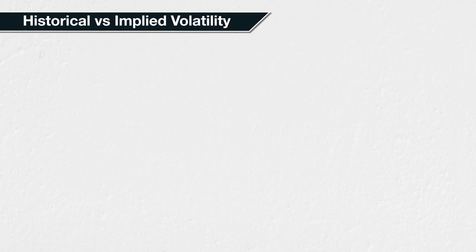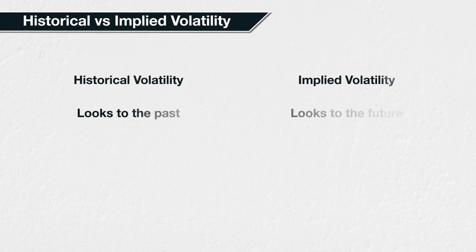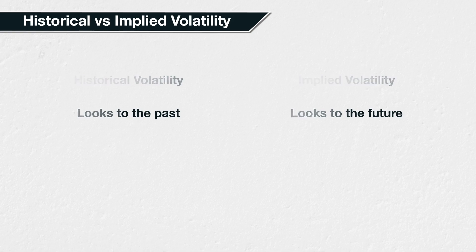There are two main types of volatility that we will be talking about during this course: historical volatility and implied volatility. To put it very simply, historical volatility looks backwards into the past, and implied volatility looks forward into the future.